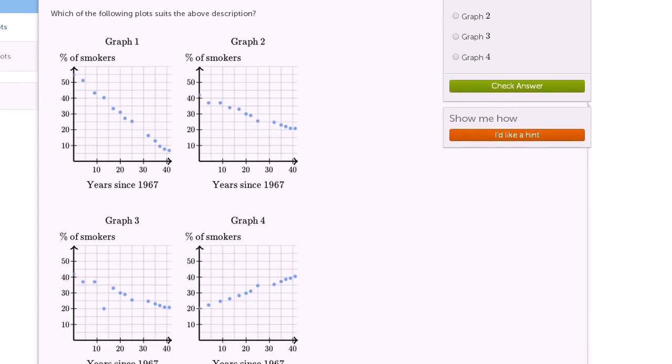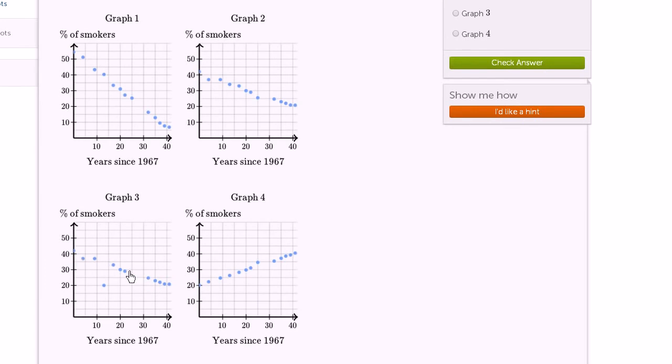This one down here also looks like that, although it's not as smooth. If you were to fit a line here, it looks like you have a few outliers. Well, this is a positive correlation, so we can definitely rule out graph four.